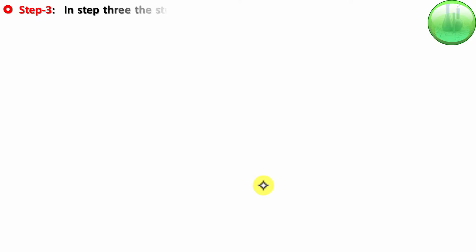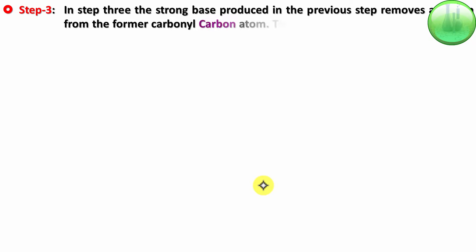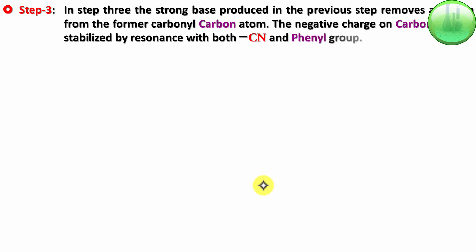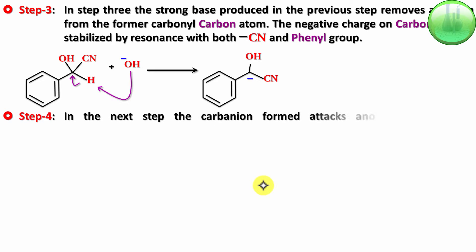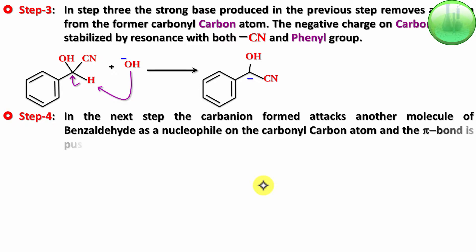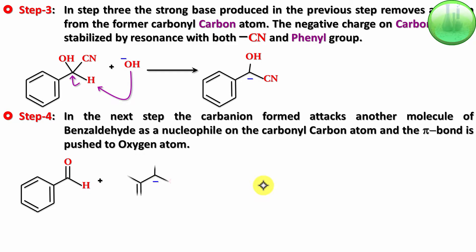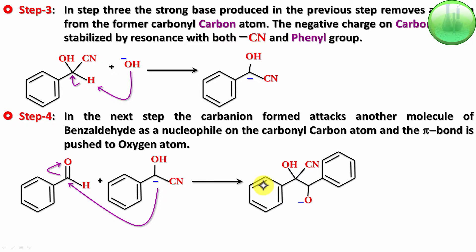Step three: the hydroxide base removes the proton from the former carbonyl carbon. The resulting carbanion is stabilized by both CN and the phenyl group — this is why the reaction proceeds for benzaldehyde but not for aliphatic aldehydes with cyanide. Step four: this carbanion acts as a nucleophile and attacks the carbonyl carbon of a second molecule of benzaldehyde, pushing the pi bond to the oxygen atom, generating a new alkoxide intermediate.